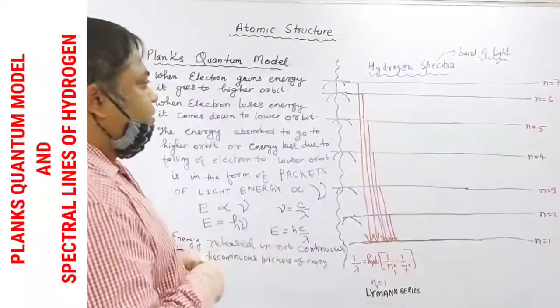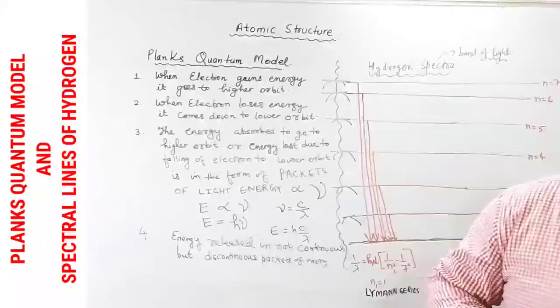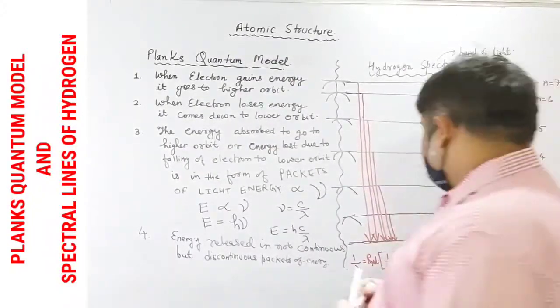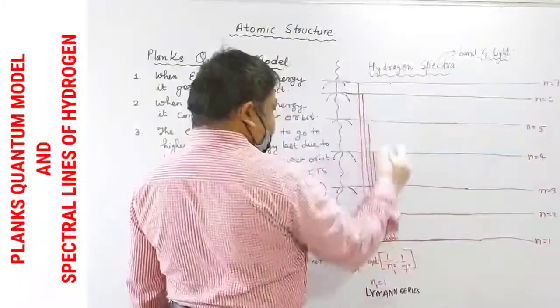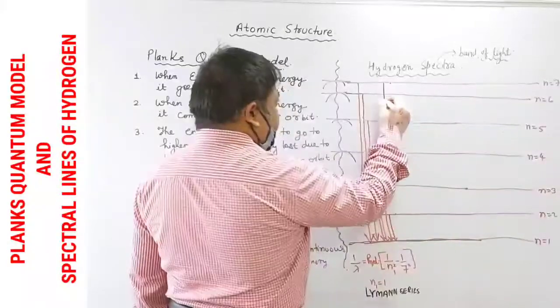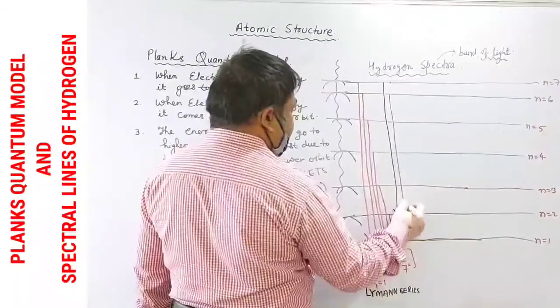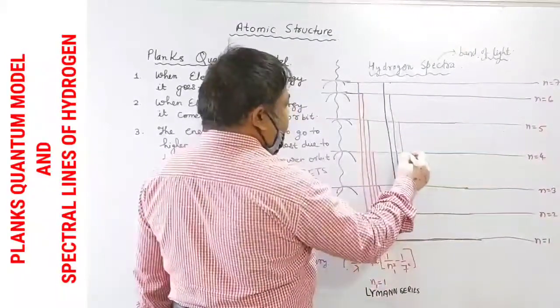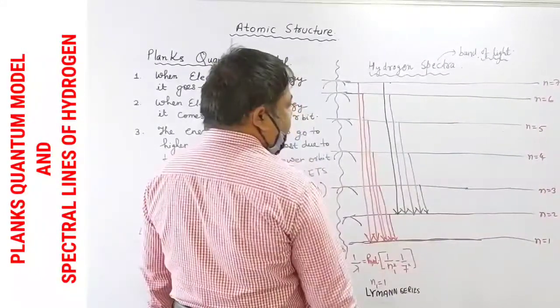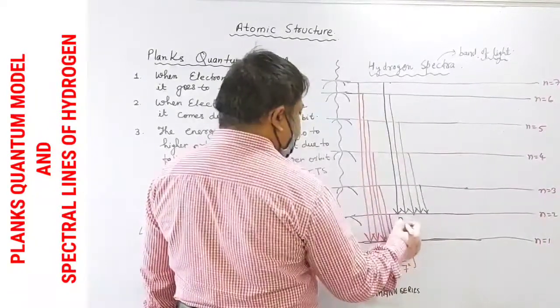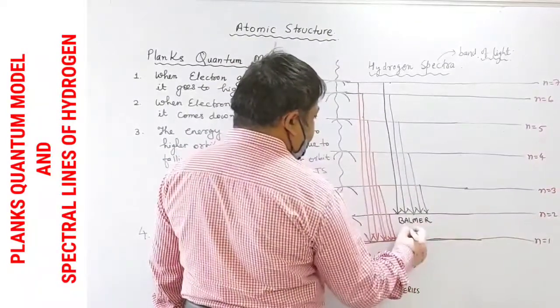Then after that what can happen is the electrons can fall from seven to two, from seven to energy level two, six to two, five to two, four to two, three to two. This will be called as Balmer series. All the visible colors are seen in this series. Balmer series.